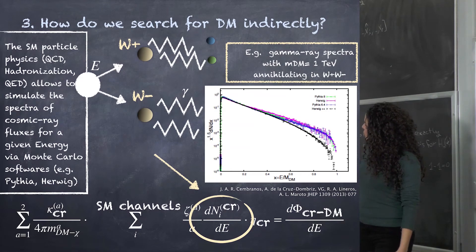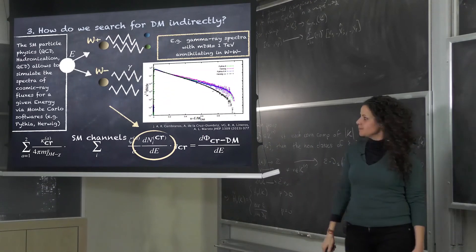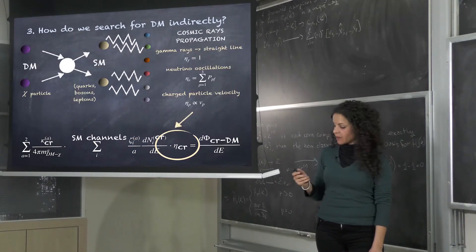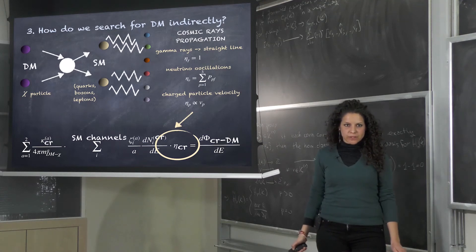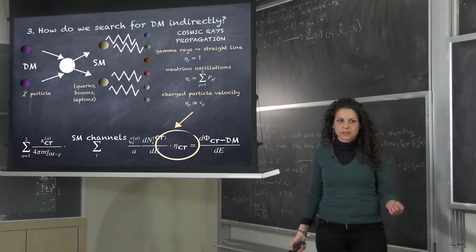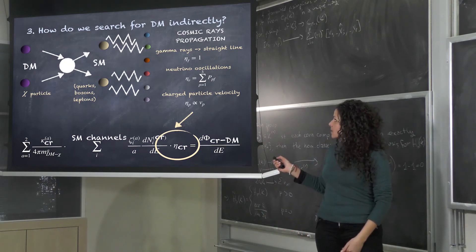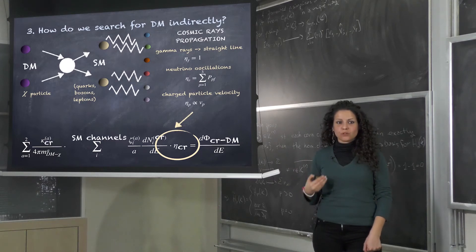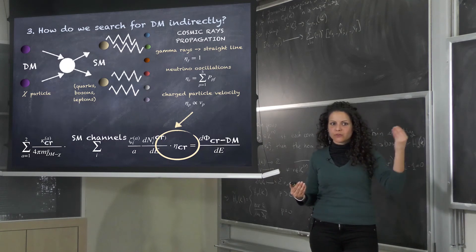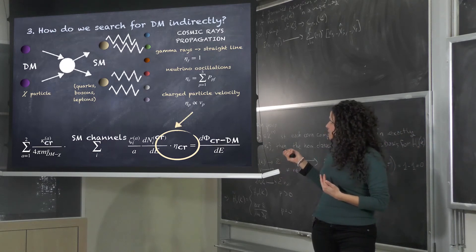This example shows the case for a dark matter particle of 1 TeV annihilating in the W channel. We have the propagation factor eta, which is related to the propagation of the cosmic ray. In the case of a gamma ray, we can consider it comes straight from source to Earth, so this factor equals one. For neutrinos, this eta factor is proportional to a mixing matrix that accounts for neutrino oscillations — meaning the flavor of neutrinos emitted at the source differs from those arriving to us. For charged particles, this factor is proportional to the velocity of the charged particle.